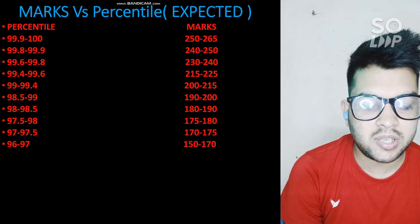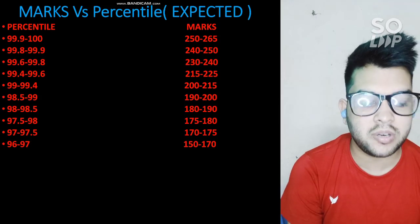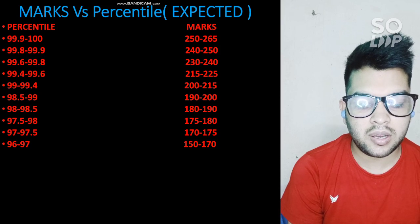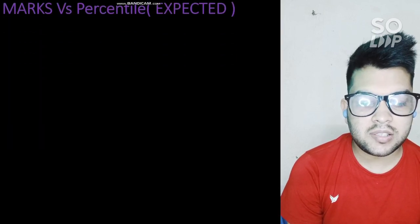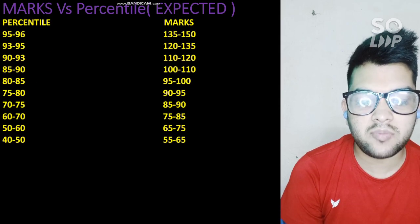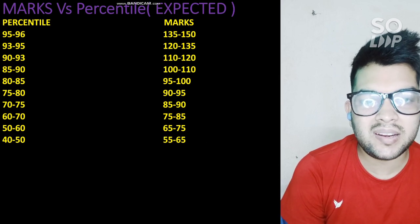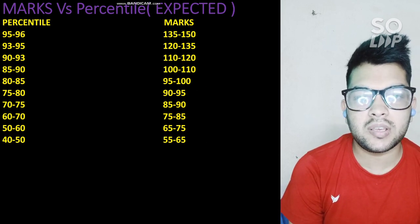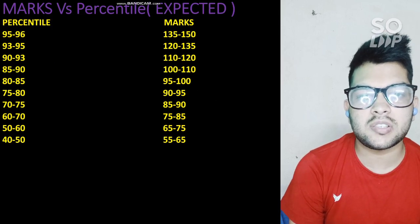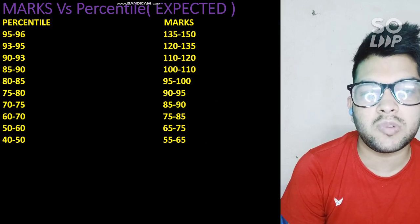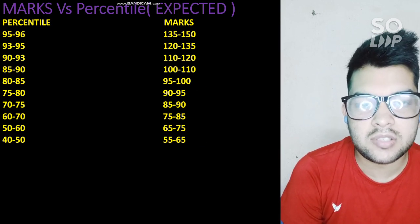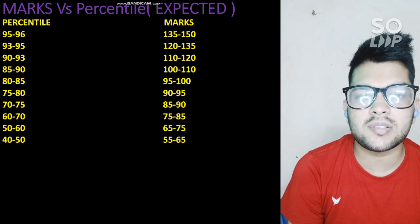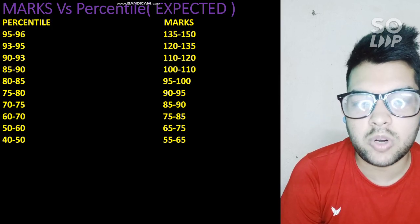The 99.9 to 100 percentile range corresponds to 252 to 265 marks since the paper was a little difficult — you can check the other data by pausing the video. There will be more competition for lower percentile students because many unique students were added in this attempt due to the cancellation of board examinations. However, it is not easy to score 200-plus marks in one or two months, so if you are targeting 200-plus you don't need to worry — the extra competition mainly affects lower percentile ranges.